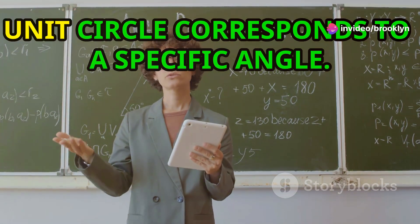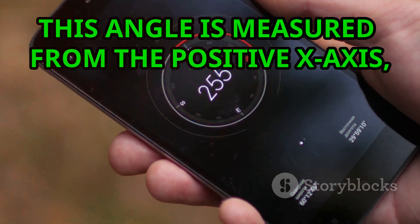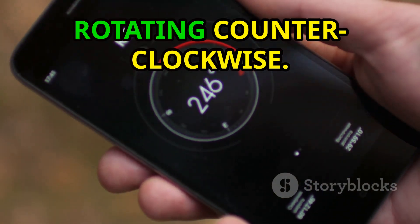The unit circle allows us to visualize the relationship between angles and their trigonometric functions. Each point on the circumference of the unit circle corresponds to a specific angle. This angle is measured from the positive x-axis rotating counterclockwise.